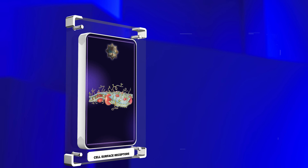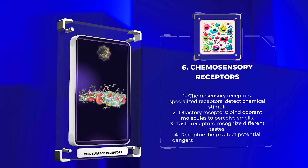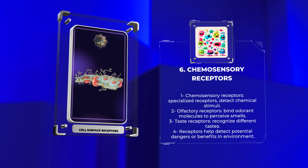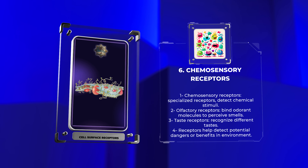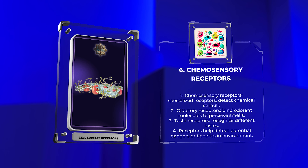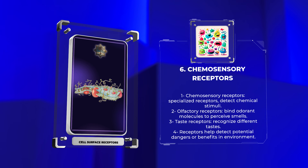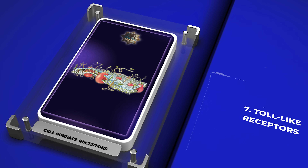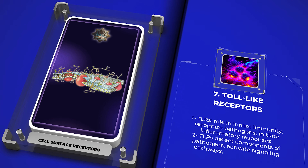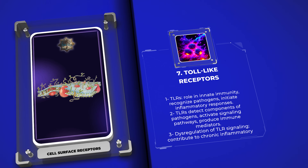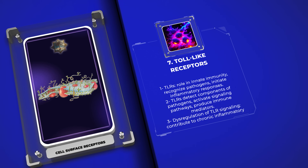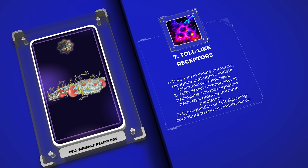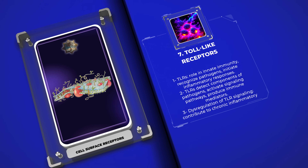Chemosensory receptors are specialized receptors that detect chemical stimuli. In the olfactory system, olfactory receptors bind odorant molecules to perceive smells. Taste receptors on the tongue and oral mucosa recognize different tastes. These receptors help organisms detect potential dangers or benefits in their environment. Toll-like receptors (TLRs) play a vital role in innate immunity by recognizing pathogens and initiating inflammatory responses. They detect components of pathogens and activate signaling pathways to produce immune mediators. Dysregulation of TLR signaling can contribute to chronic inflammatory diseases and autoimmune disorders, and studying TLR signaling can identify potential therapeutic targets.